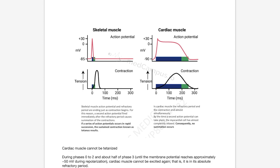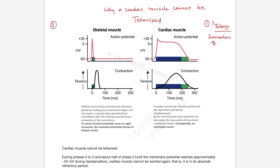Let's try to understand an important concept from physiology: why a cardiac muscle cannot be tetanized. There are three interesting things you need to have a basic understanding about. Number one, tetani means summation of contractions — it's a summation of contractions which leads to a tetanus condition. The electrolyte abnormality that leads to tetani is hypocalcemia. Because of low levels of calcium in the body, there is increased depolarization by sodium. Third, we have a safety feature wherein cardiac muscle cannot be tetanized.